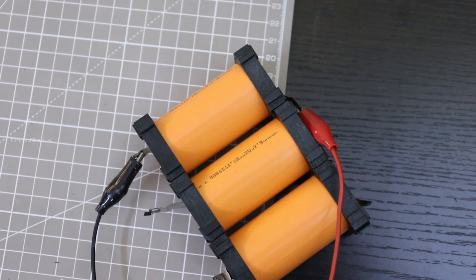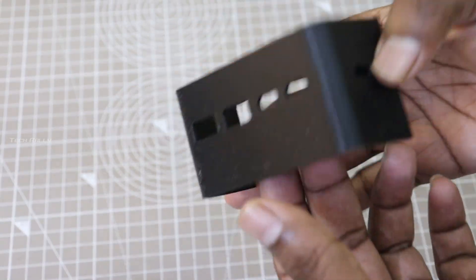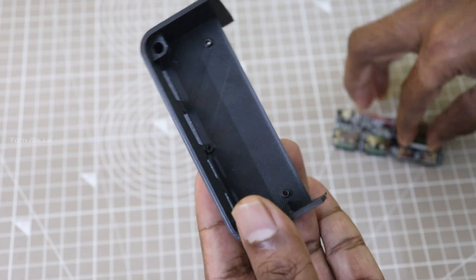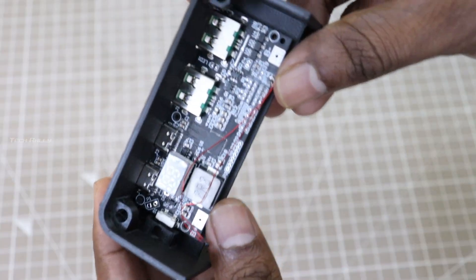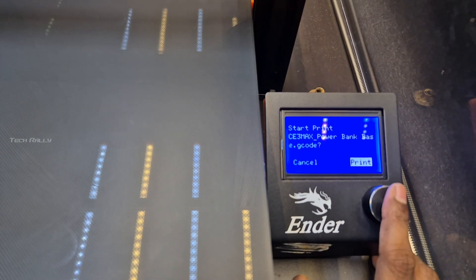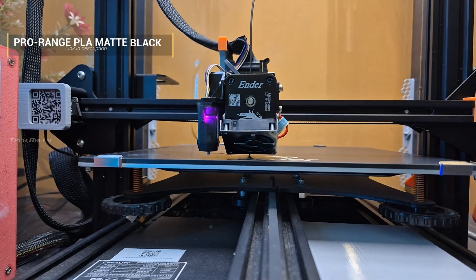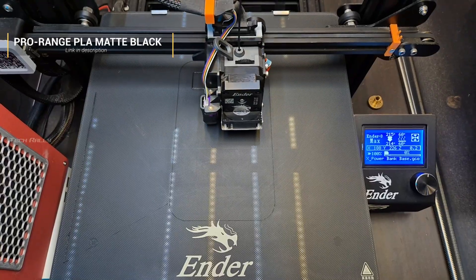Meanwhile it's charging, let's 3D print the enclosure. This one is a prototype I made to test if the board fits properly into the screw holes and it does. Now let's go and print the final version. The filament I am using is the Pro Range matte black filament which I brought from Robo.in. It is currently the cheapest matte black filament available on the market.